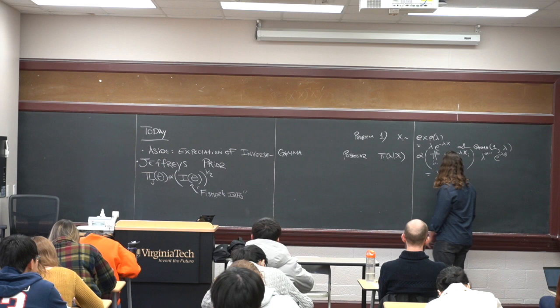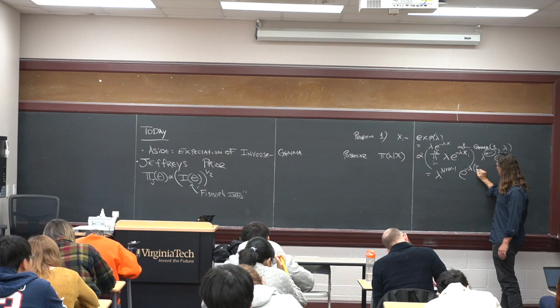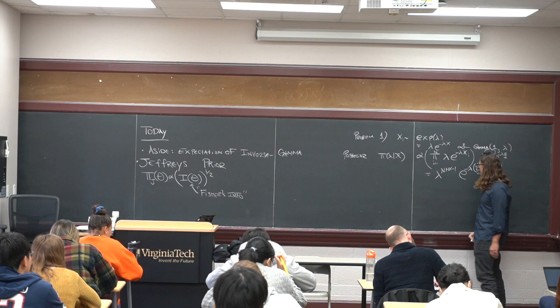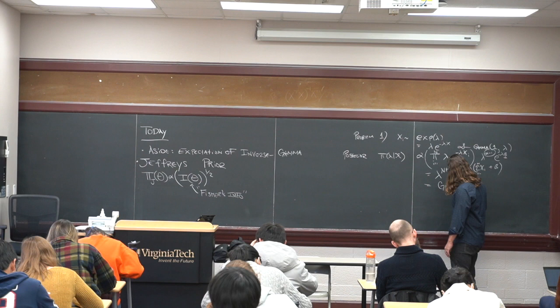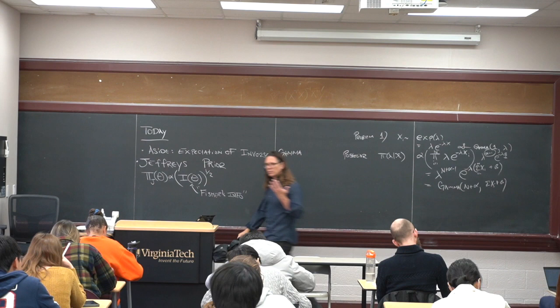So this is going to be lambda to the n plus alpha minus 1, times e to the minus lambda times the sum of the x_i's plus beta. There's just one beta and one alpha in all of that. We recognize this as a gamma with parameters n plus alpha and sum of the x_i's plus beta. That'll get you 10 points on that problem.